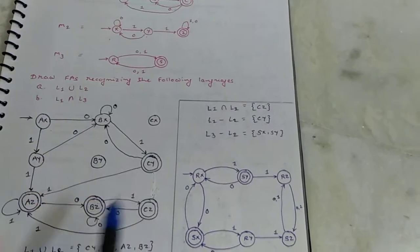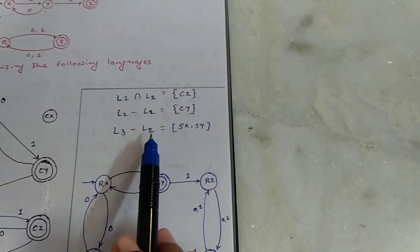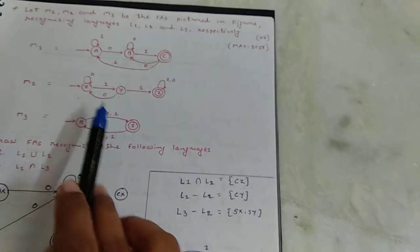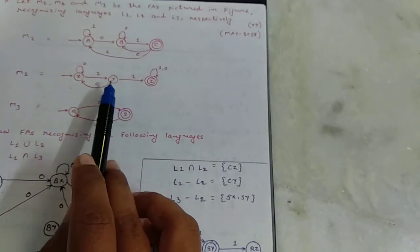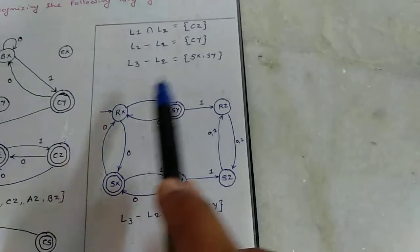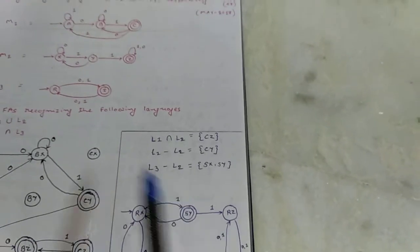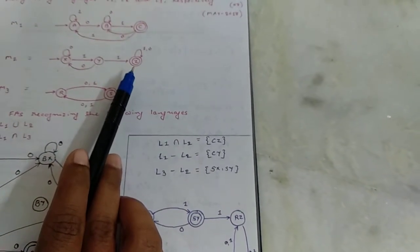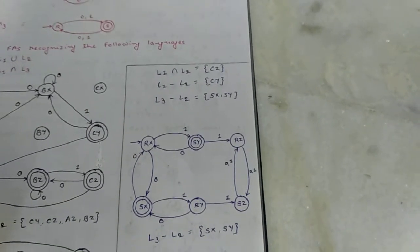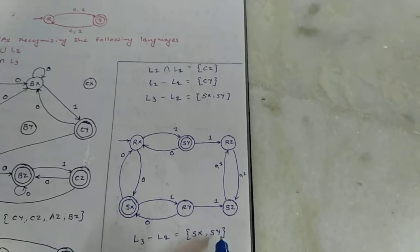Rest of automata is same like this. If you use L3 minus L2, then you have to first cross product of L3 and L2. L3, R with X, S with X, R with Y, R with Z, S with X, S with Y, S with Z. Draw all possible states and transition functions. For L3 minus L2, in L3, final state is S and in L2, final state is Z. So all the possible states in which S comes but not Z. So possible states are SX and SY.